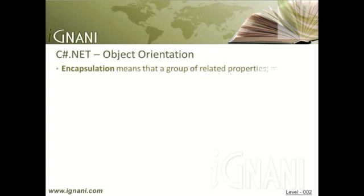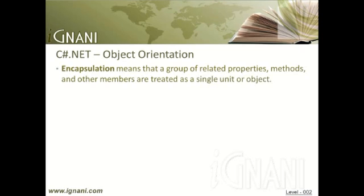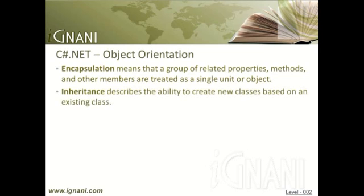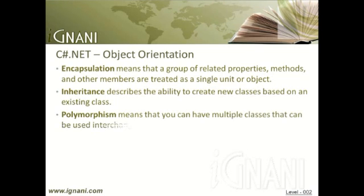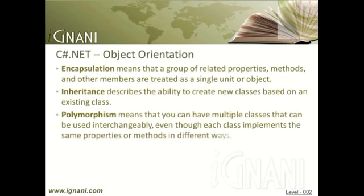Encapsulation means that a group of related properties, methods, and other members are treated as a single unit or object. Inheritance describes the ability to create new classes based on an existing class. Polymorphism means that you can have multiple classes that can be used interchangeably, even though each class implements the same properties or methods in different ways.